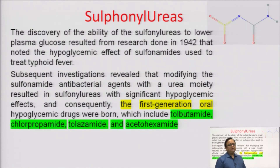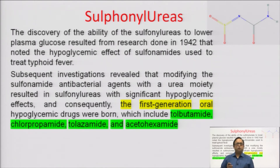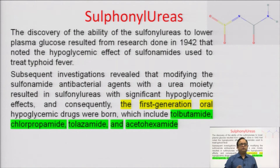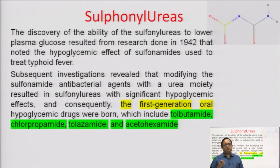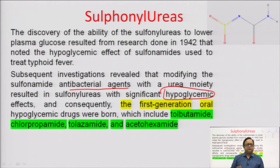Sulfonylureas represent a very interesting discovery. They were discovered during research on antibacterials in 1942, when a hypoglycemic effect was noted in sulfonylureas used to treat typhoid fever. Initially used for their antibacterial potential, the hypoglycemic effect was actually a side effect, which led to their development as anti-diabetic agents.